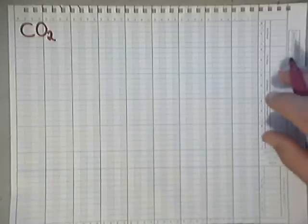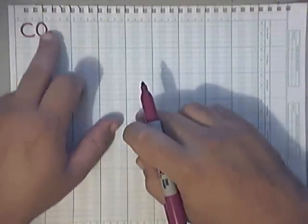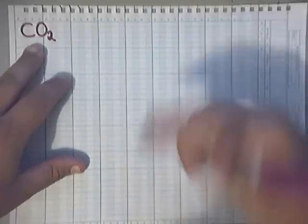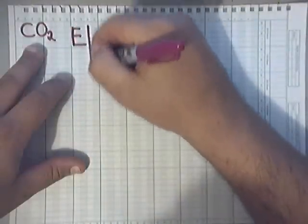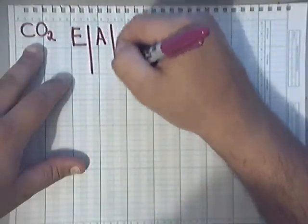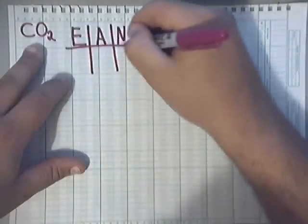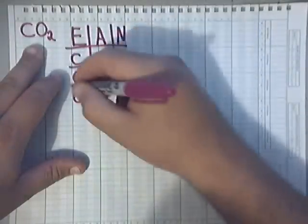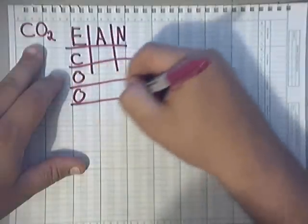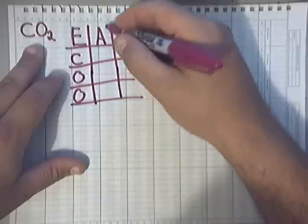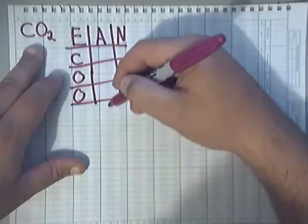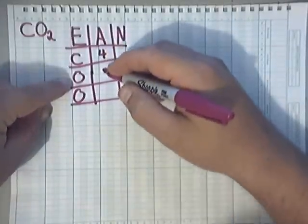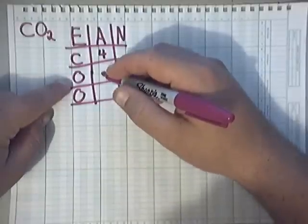Alright guys, in this video I'm going to be showing you how to draw the Lewis dot structure for CO2. Now remember, we're going to use an EN chart. E, A, and N. E stands for the elements, so that's carbon, oxygen, and oxygen. You're just making a list of the individual elements there. Valence electron count is column A. Carbon is in column 14, it's got 4. Oxygen is in column 16 on the periodic table, so it's got 6.